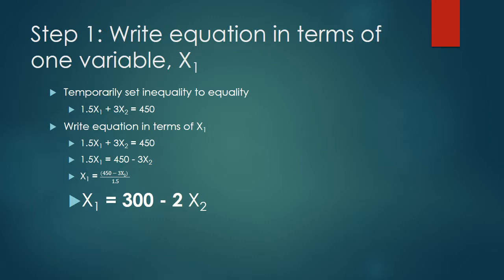Step 1 is write the equation in terms of one of the variables. In this example, I say x1. You could really take any variable you want, but since it doesn't matter, I find starting with the first one is usually the easiest. So we temporarily set the inequality to an equality. You just have to do this for mathematics, and we write out the equation for one. So we come out with x1 equals 450 minus 3x2 divided by 1.5.